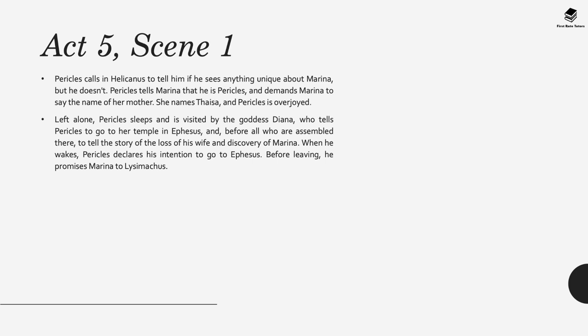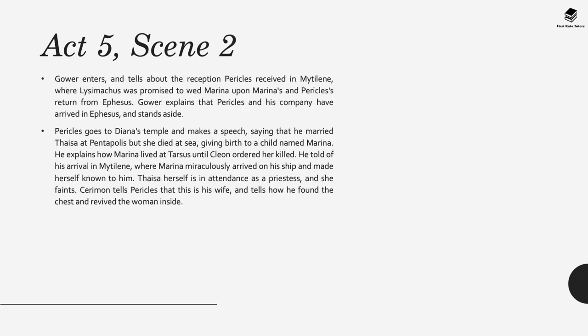Left alone, Pericles sleeps and is visited by the goddess Diana, who tells him to go to her temple in Ephesus and before all who are assembled there tell the story of the loss of his wife and discovery of Marina. When he wakes, Pericles declares his intention to go to Ephesus. Before leaving, he promises Marina to Lysimachus.